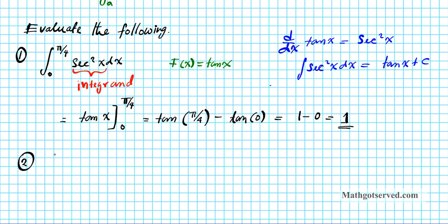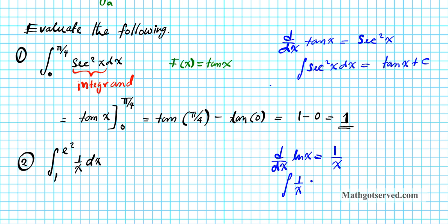Let's take a look at example number 2. What is the definite integral from 1 to e squared of 1 over x dx? Let's find this integral by using antiderivatives. The integrand is 1 over x. Do you remember the function that results in 1 over x upon differentiation? It is the natural logarithm function. Recall d/dx of the natural logarithm of x is equal to 1 over x. So the integral of 1 over x dx is the natural logarithm of x plus some constant c, meaning uppercase F of x is ln x.